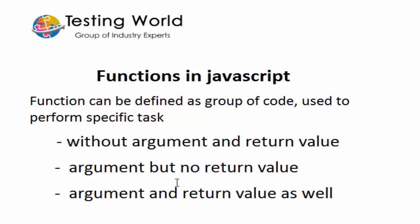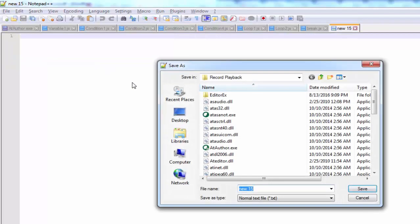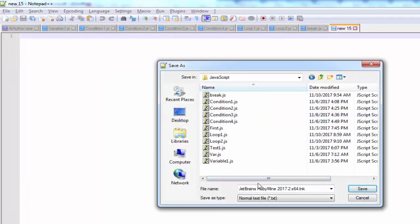Previously we have seen console.log — I will explain what we mean by the return value. Now I am sending this request again. This is a pre-request script which is going to execute before sending the request. I am just moving to the console, and if you check it here — that's my URL because we want to print 'url'. So here we have seen how we can use setEnvironmentVariable and getEnvironmentVariable by coding.